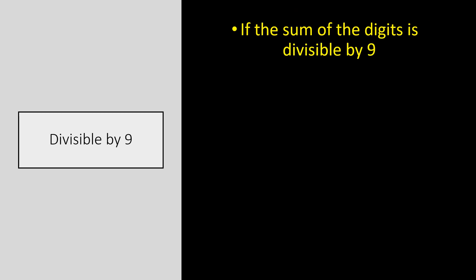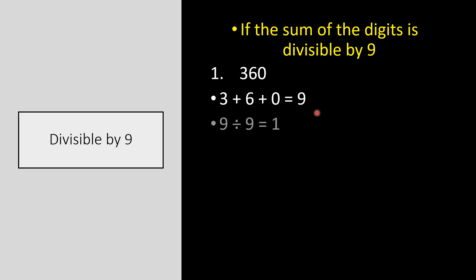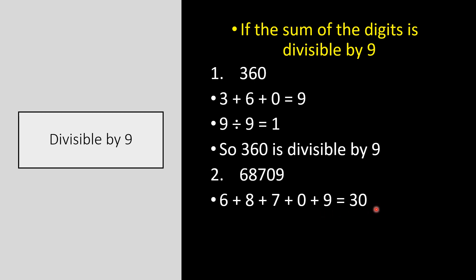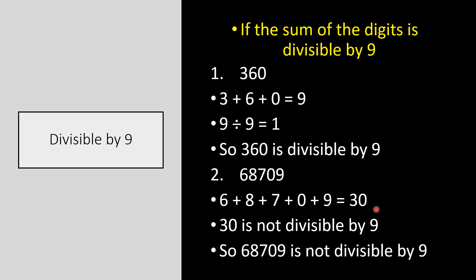Divisibility rule for 9: if the sum of the digits is divisible by 9, then the number is divisible by 9. For example, 360 — sum of digits is 3 + 6 + 0 = 9, and 9 divided by 9 equals 1, so 360 is divisible by 9. Another example: 68709 — sum is 6 + 8 + 7 + 0 + 9 = 30, and 30 is not divisible by 9, so 68709 is not divisible by 9.